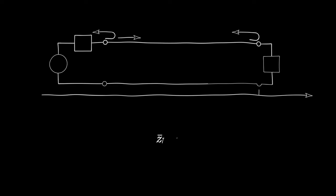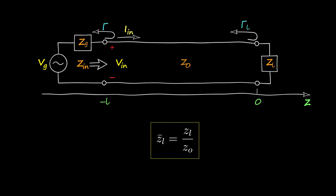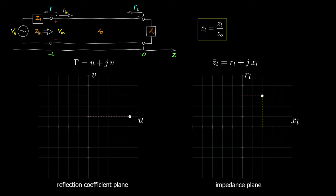In transmission line theory, we usually deal with normalized impedance, as we saw in a previous video. Normalized impedance means dividing the load impedance by the characteristic impedance of the line. So each time we say impedance, we mean a normalized impedance, so that the approach applies to any transmission line with any characteristic impedance. Impedance is a complex number consisting of real and imaginary parts — resistance and reactance. Reflection coefficient is also a complex number with real and imaginary parts; it can also be represented in polar form as magnitude and phase.